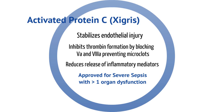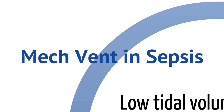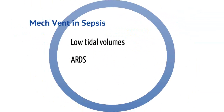Next, let's take a look at how mechanical ventilation plays a role in sepsis. For patients with ARDS, a tidal volume of 6 mL per kg of predicted body weight should be used. The use of PEEP will help prevent lung collapse and thus lung injury in mechanically ventilated patients with sepsis.